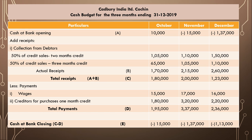This is the cash budget in the books of Cadbury India Limited for three months ending 31st December 2019 — October, November, and December. The opening cash balance is given as rupees 10,000. We add receipts — collection from debtors — where 50% of credit sales are realized with two months credit and the remaining 50% with three months credit.